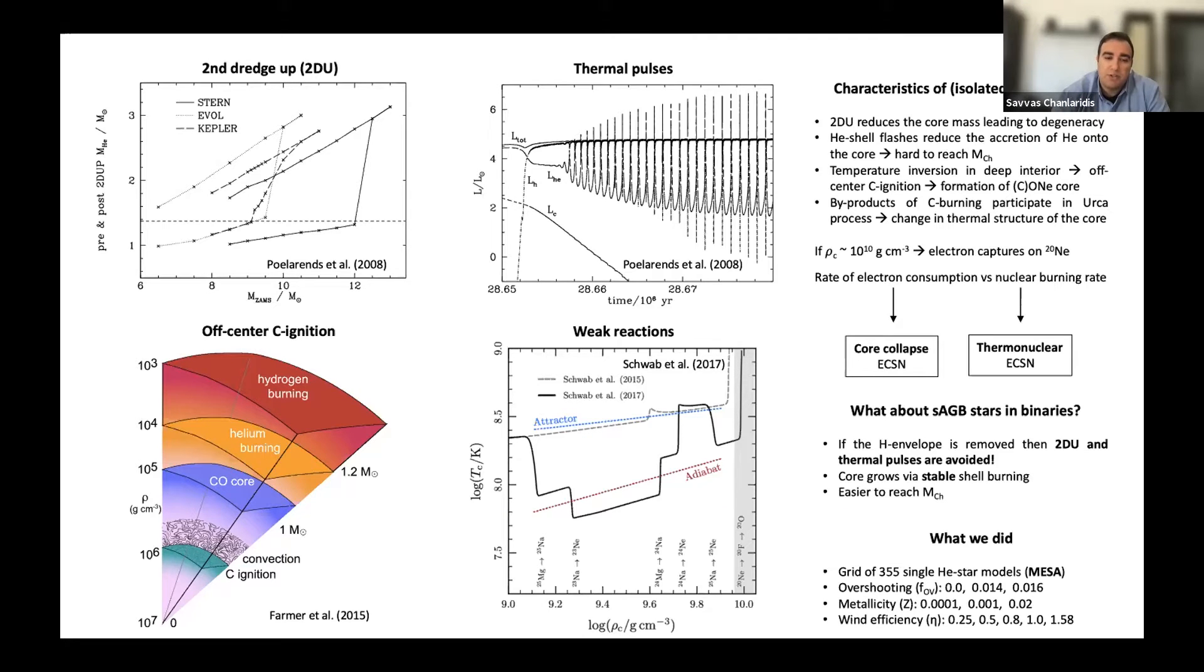Now in order to study that, we used MESA, which as you probably know is a one-dimensional stellar evolution code, to model helium stars, which can be thought as the naked exposed core of super-AGB stars in the binary. So like super-AGB stars, our models ignite carbon off-center, creating a carbon burning front which again propagates towards the center and converts the carbon-oxygen core into oxygen and neon.